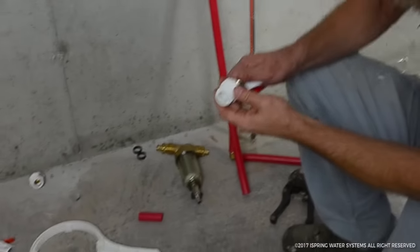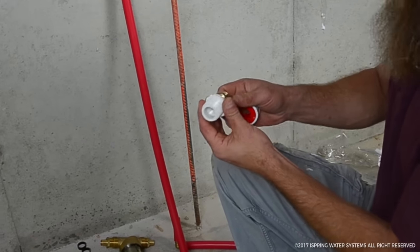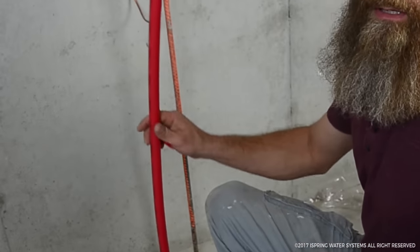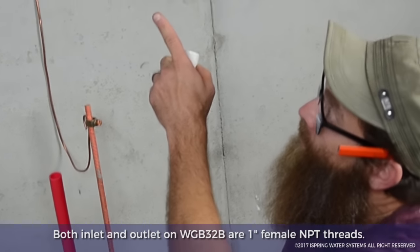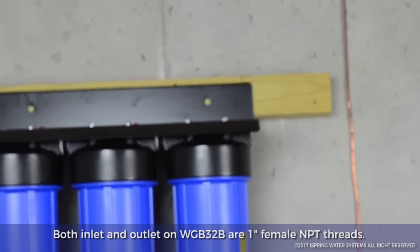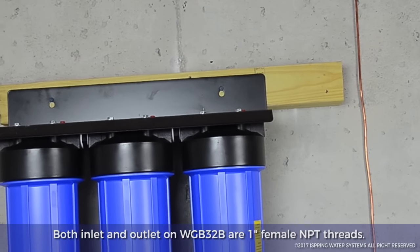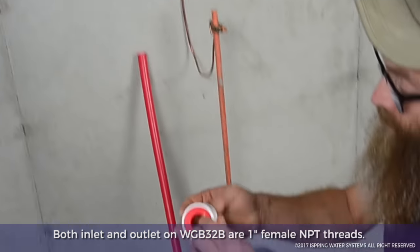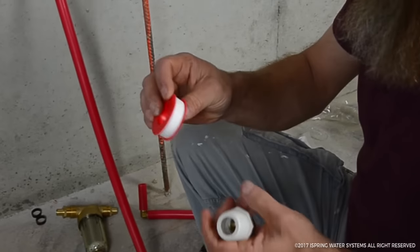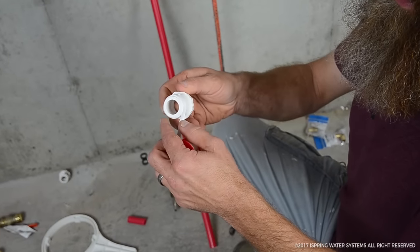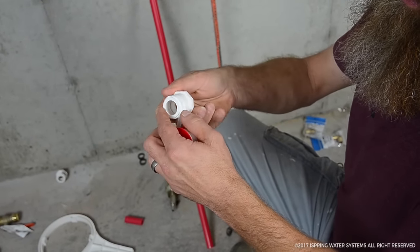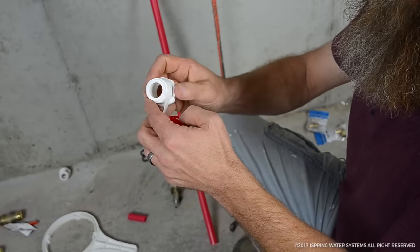The next thing we need to do is prep all our fittings. Since I have a three-quarter inch line and this has a one inch inlet, we have to reduce down to three quarters. So we have to use Teflon tape on everything. I always lay it on there in the direction that it tightens. I usually do about three times around.